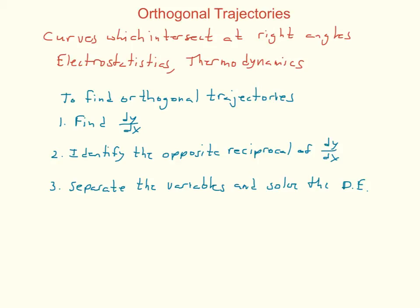Another topic is finding orthogonal trajectories — curves that intersect at right angles. You'll be given an equation, take its derivative to find dy/dx, and then set dy/dx equal to the opposite reciprocal of that expression, because perpendicular (orthogonal) curves must have slopes that are opposite reciprocals. Then use separation of variables to solve that differential equation.